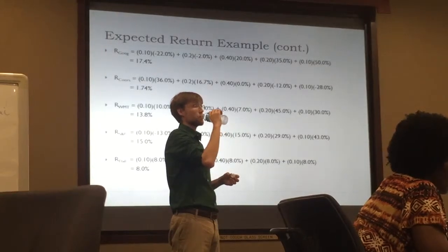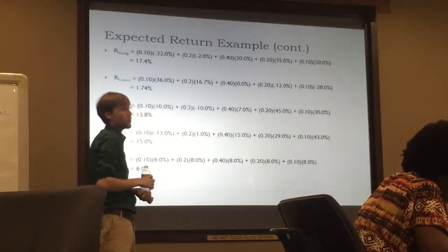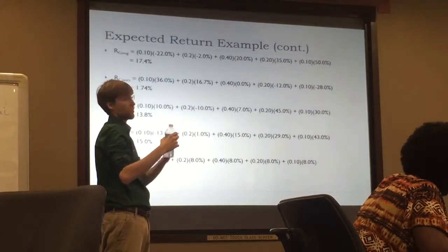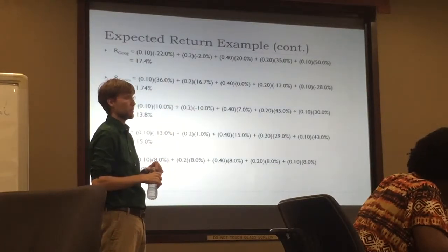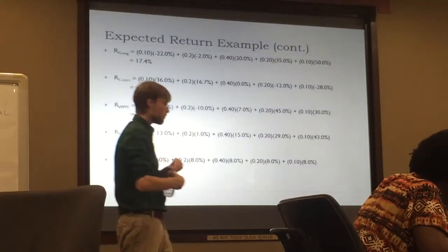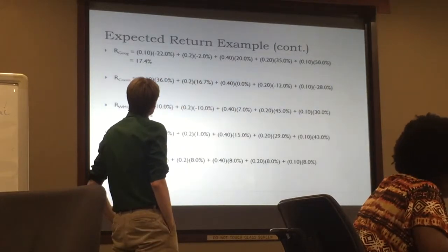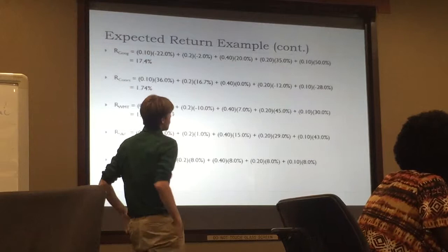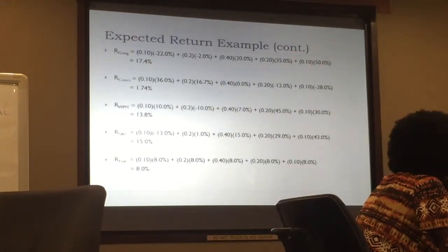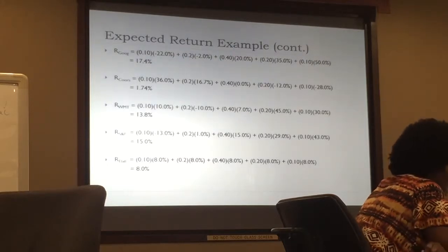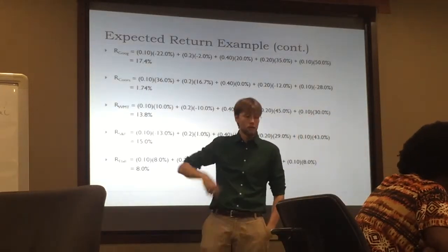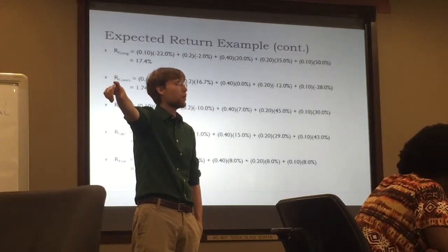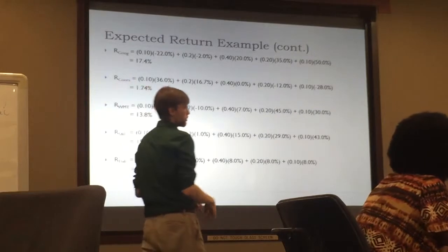It's not the average — it's forward-looking, but it has the flavor of the average. When you think about an average, you're looking at a sample from the past. Here we're thinking about what's going to happen. Google has a high expected return because in a boom it delivers 50%, and though that only happens 10% of the time, outliers impact weighted averages. If this probability distribution were stable and you held this for many years in a row, on average you'd be earning 17.4%.